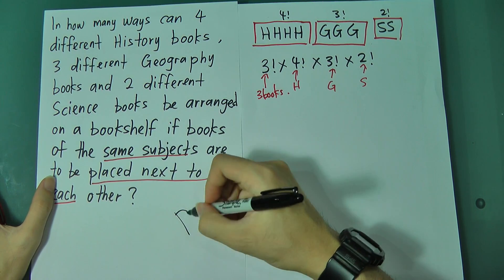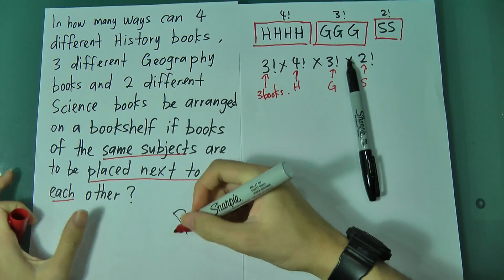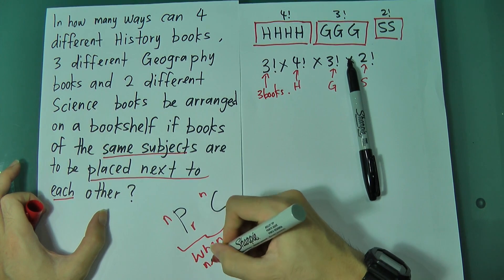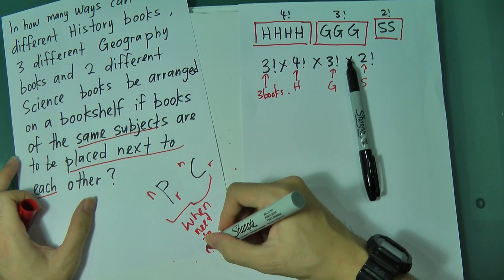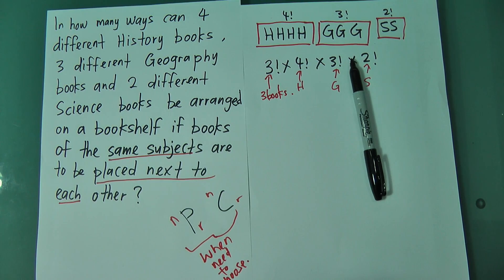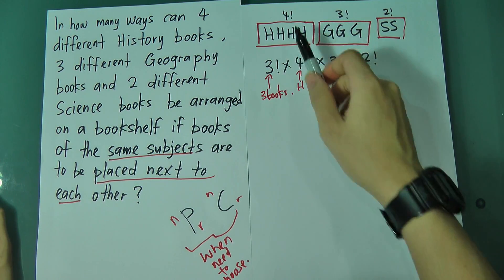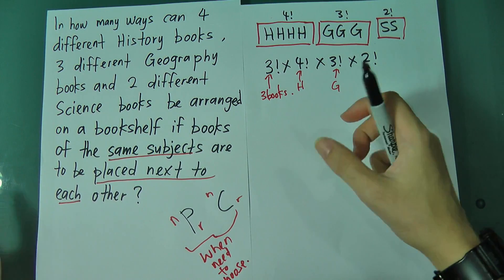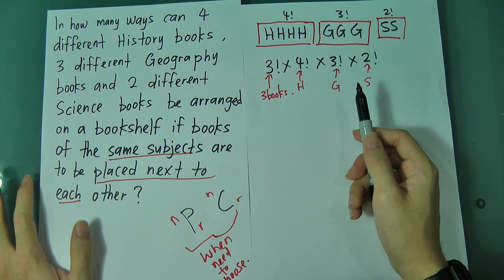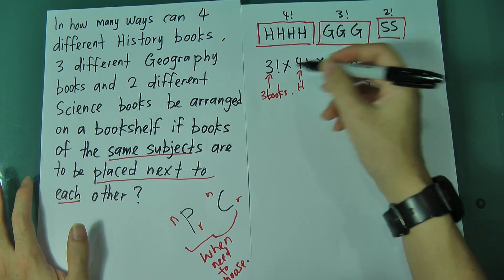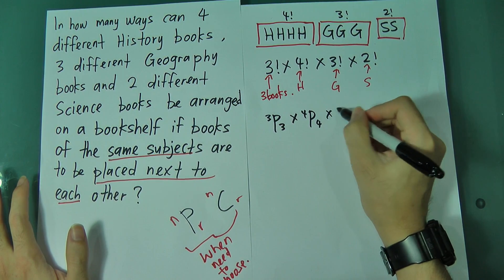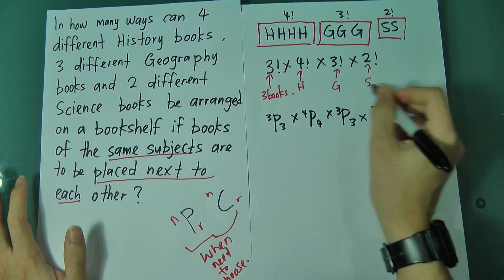Most of the time you will use P or C — NPR or NCR — when you need to choose. When you need to choose, like selecting 3 books from a larger set, then you use C or P. You use P and C only when you have to choose some amount from a total.